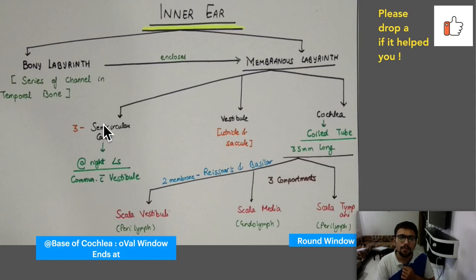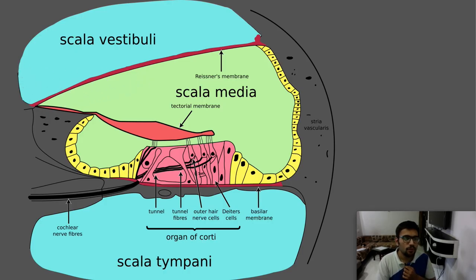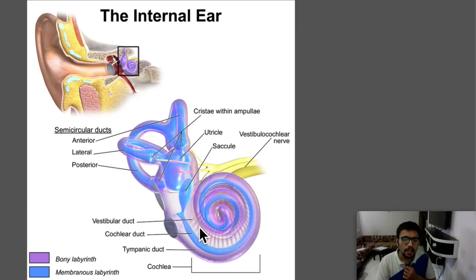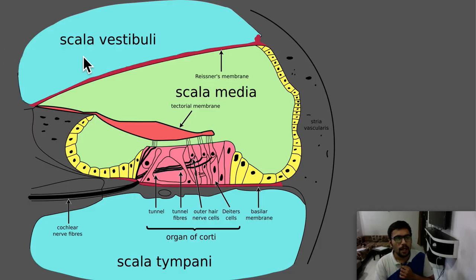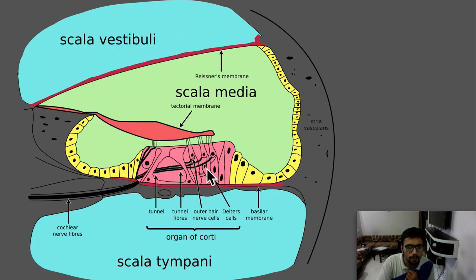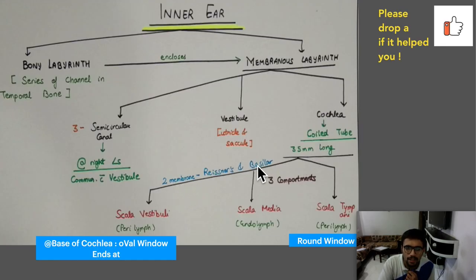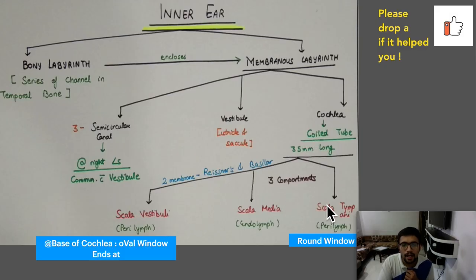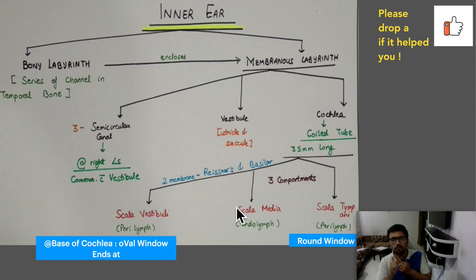The cochlea has two membranes: Reissner's membrane and the basilar membrane. These two membranes divide the cochlea into three compartments: scala vestibuli, scala media, and scala tympani. The scala vestibuli and scala tympani are shaded the same color because both contain perilymph, whereas the scala media contains endolymph. It is very important to know which part of the ear contains perilymph and which contains endolymph.